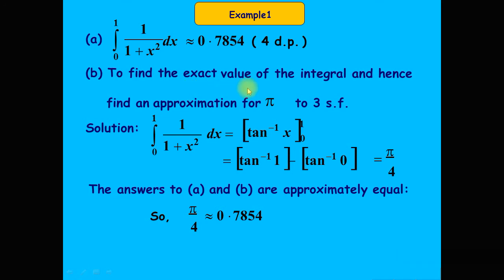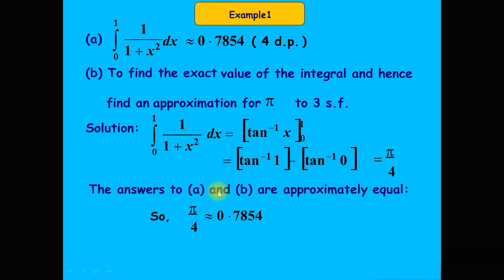To find the exact value of the integral and hence find an approximation for π to three significant figures: the integration of 1/(1 + x²) with respect to x is tan⁻¹(x). Applying the limits, tan⁻¹(1) − tan⁻¹(0) = π/4 − 0 = π/4. So the exact value of the integration is π/4.